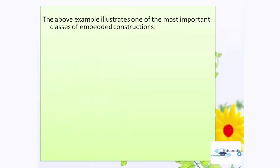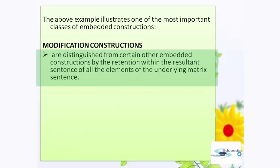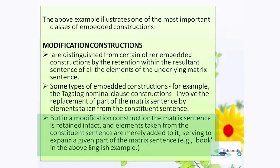The above example illustrates one of the most important classes of embedded constructions. Modification constructions are distinguished from certain other embedded constructions by the retention within the resultant sentence of all elements of the underlying matrix sentence. Some types of embedded constructions — for example, the Tagalog nominal clause constructions — invoke the replacement of part of the matrix sentence by elements taken from the constituent sentence. But in a modification construction, the matrix sentence is retained in full, and elements taken from the constituent sentence are merely added to it, serving to expand a given part of the matrix sentence, for example, 'book' in the above English example.